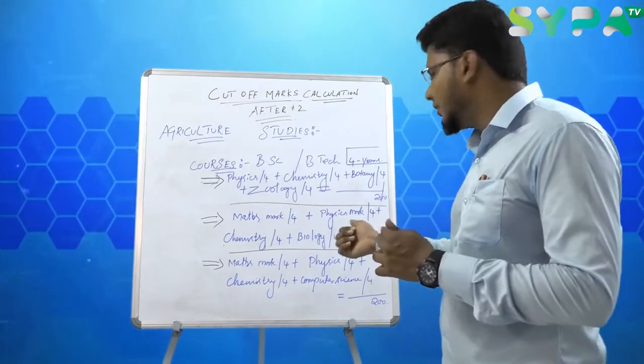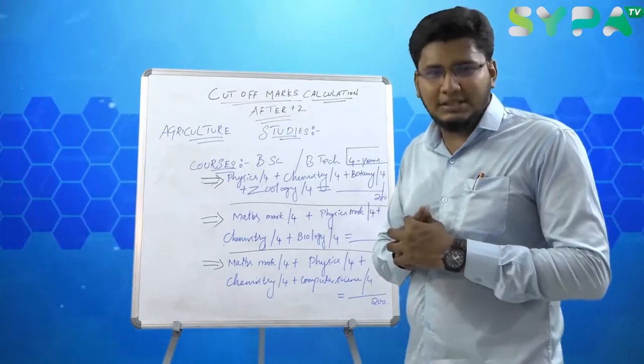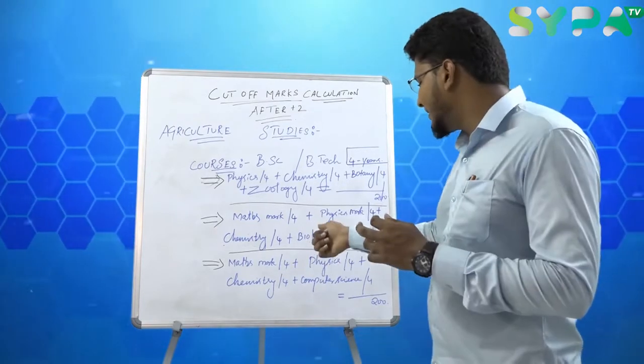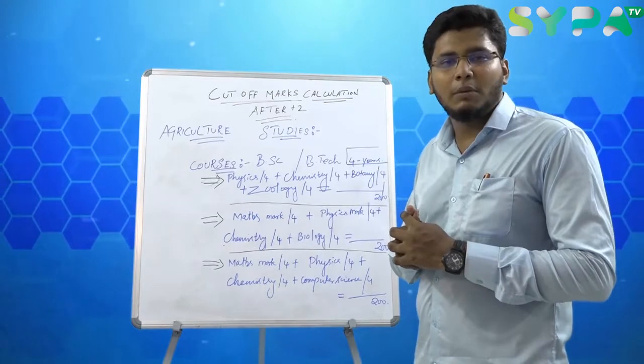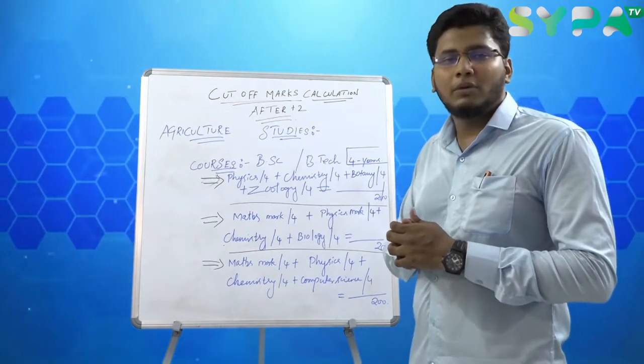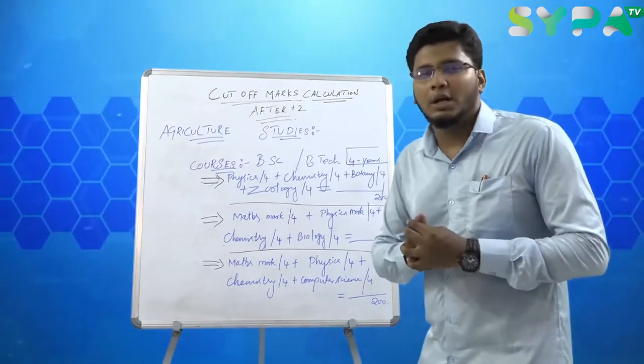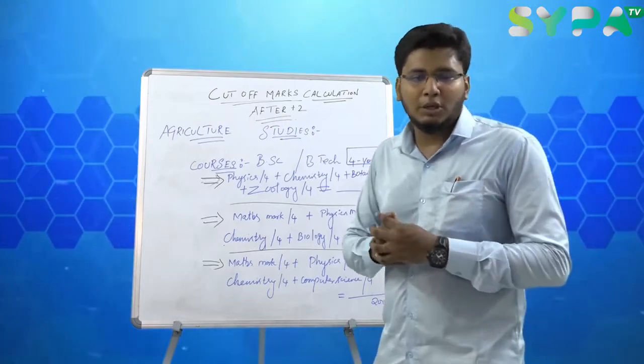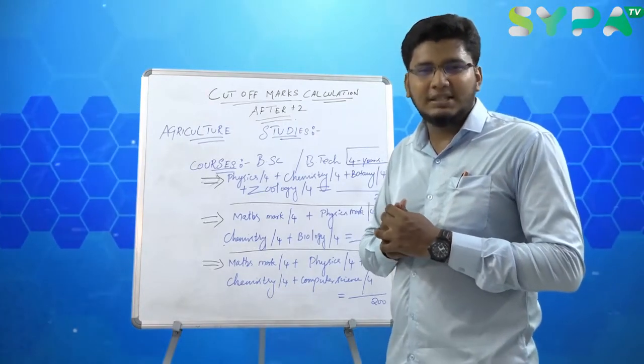Second group is the Science group - Computer Science students. Math divided by 4, Physics divided by 4, Chemistry divided by 4, Computer Science divided by 4 equals 200. You can see the cutoff mark. Basic requirement is 50 percentage marks.